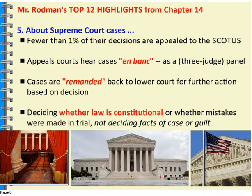Very few cases make it to the Supreme Court in terms of them granting writ of certiorari — or 'show me the documents, we will hear the case.' There are thousands of cases appealed to SCOTUS each year, and less than 200 are usually heard. Appeals courts hear cases en banc, meaning there may be 15 judges in a circuit but only a three-judge panel of those 15 actually hears the case. Sometimes cases appealed to the Supreme Court are remanded to the lower court — sent back to a circuit or district court to be retried based on different evidence or because proper procedures had not been followed.